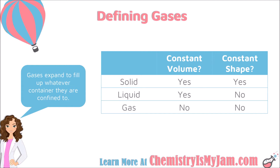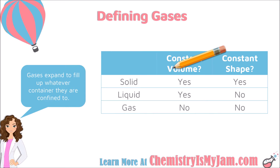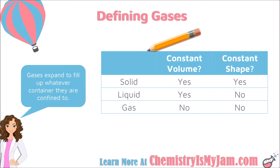Most of us are fairly comfortable identifying a substance as either a solid, a liquid, or a gas. But in science, we want to apply some questions to that definition: does the substance have a constant volume, and does the substance have a constant shape? Consider a pencil. If I pick it up and move it from one location to another, the volume did not change and the shape did not change — it remained constant. So a solid has a constant volume and a constant shape.